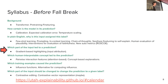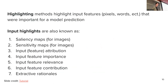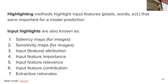We're now ready to move on to our next explainability method: which part of the input led to a prediction. With free text explanations we answered why an input was assigned an answer by showing reasoning in plain English. Now we'll use another way — showing which parts of the input are responsible for the prediction. These methods come with many different names: highlighting, saliency maps, sensitivity maps for images, input attribution, input feature attribution, relevance, contribution, and extractive rationale — all likely referring to the same thing.